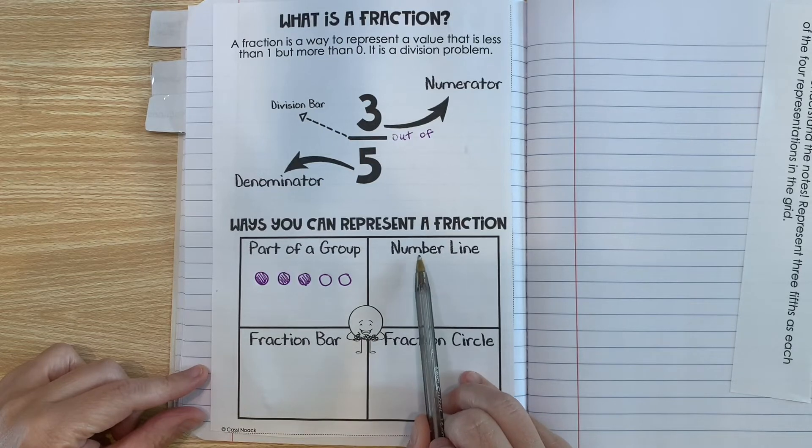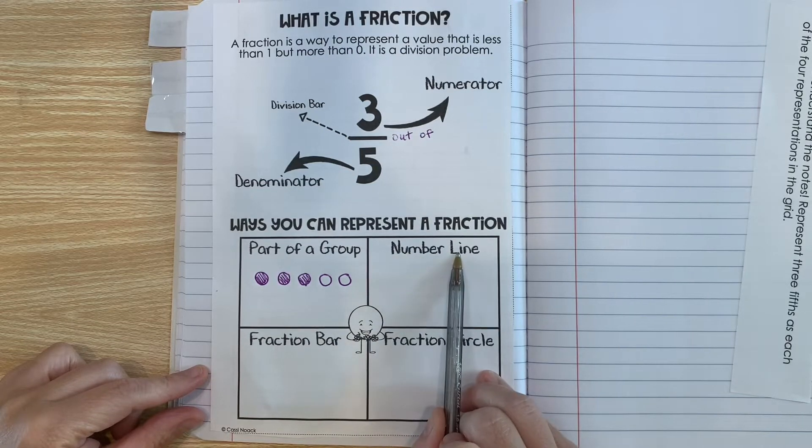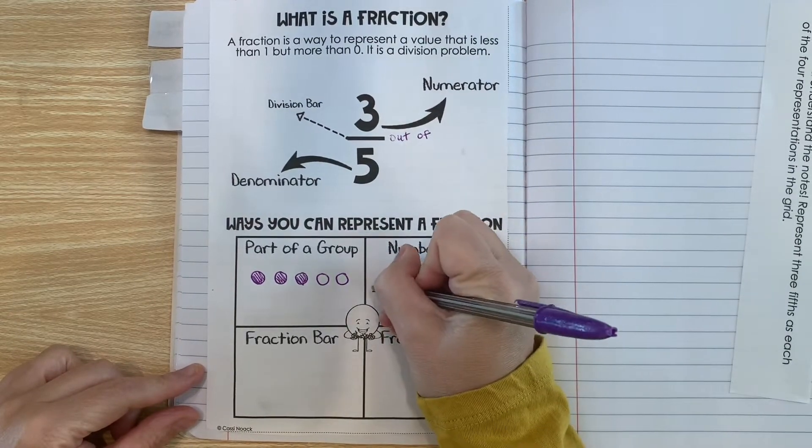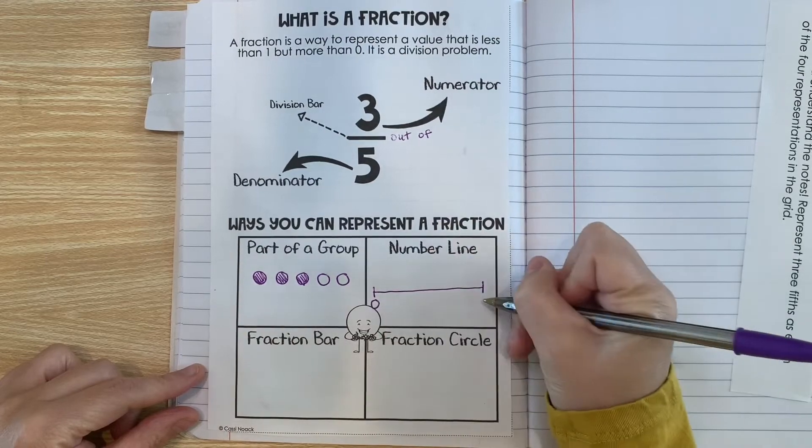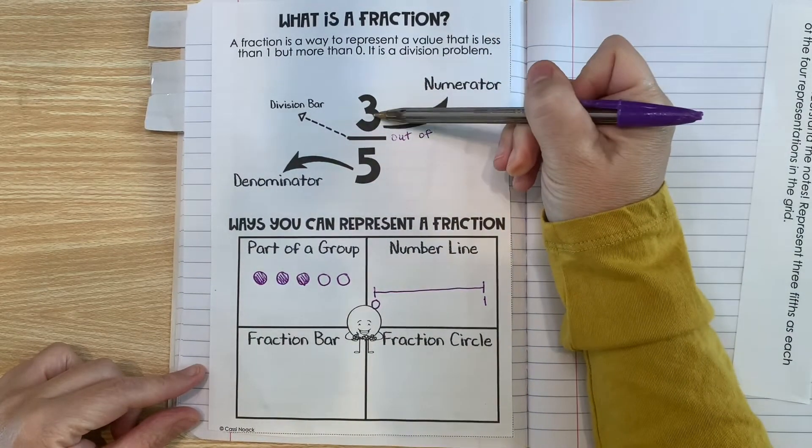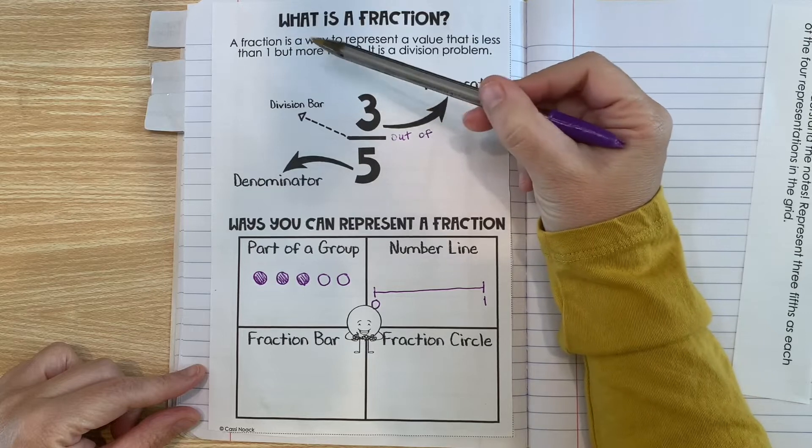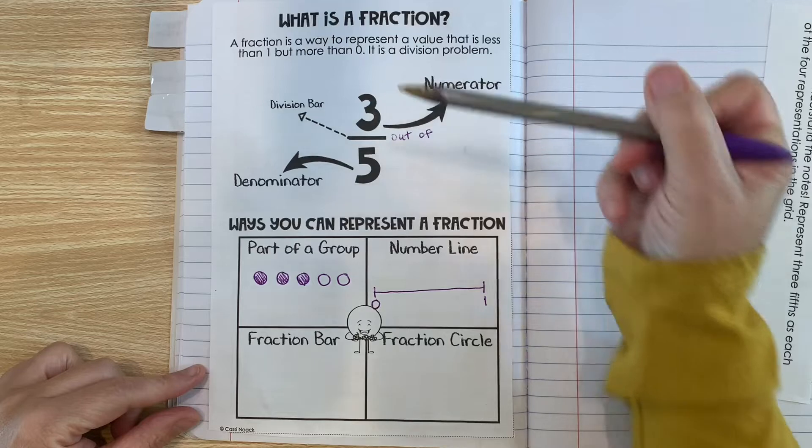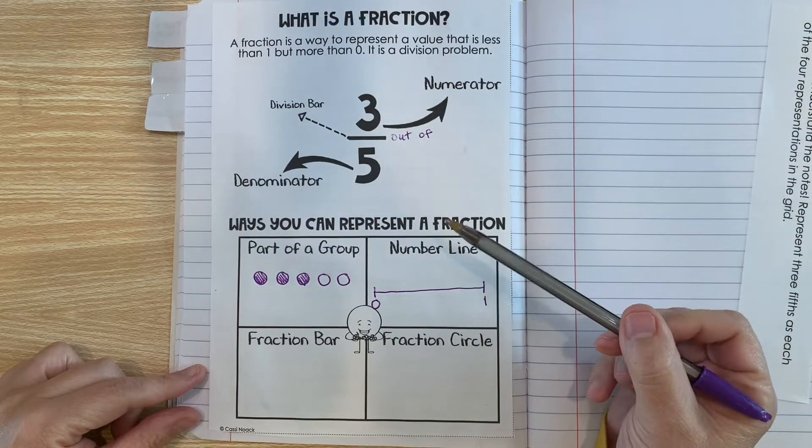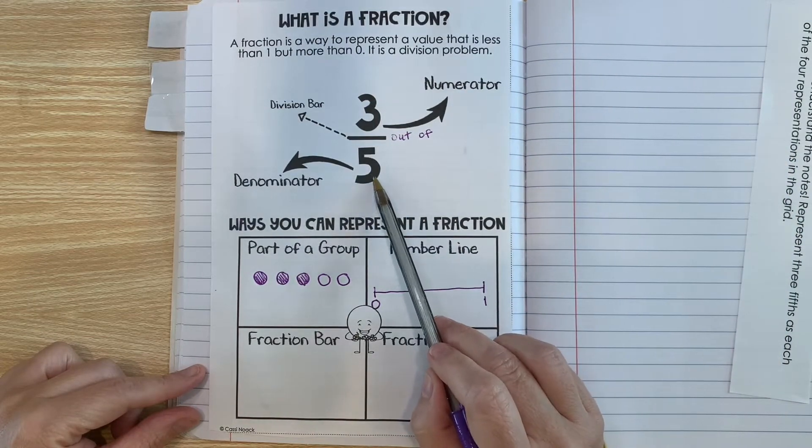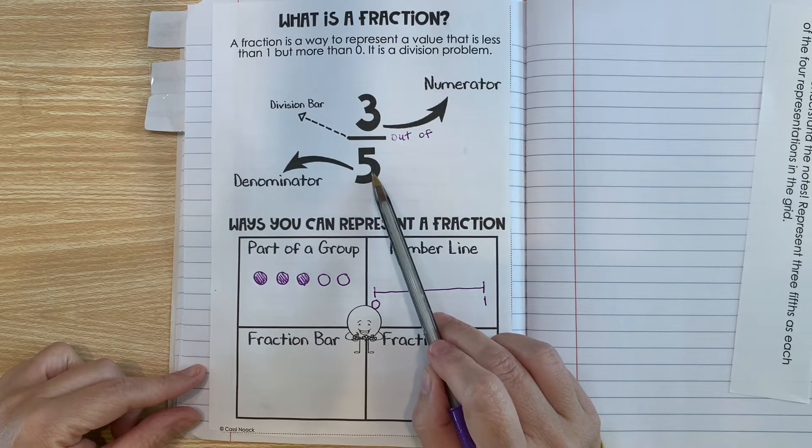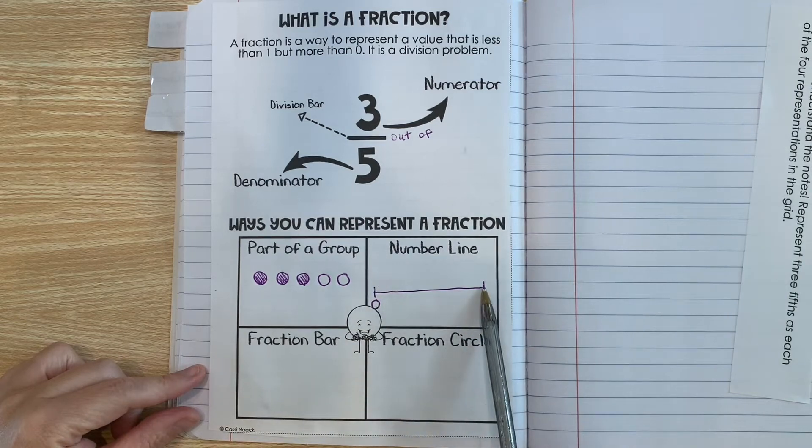We can also represent a fraction on a number line. So to do that, we'll just start with a line. And this line is going to span zero to one. And that's because all fractions are between zero and one, as long as it's a proper fraction. And we'll learn more about that later. So the next thing you're going to do is break it up into the number of parts that the denominator says. So remember the denominator represents how many parts are in one whole. So we have to break this into five equal parts.